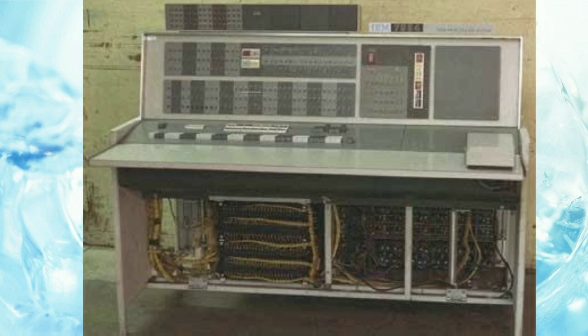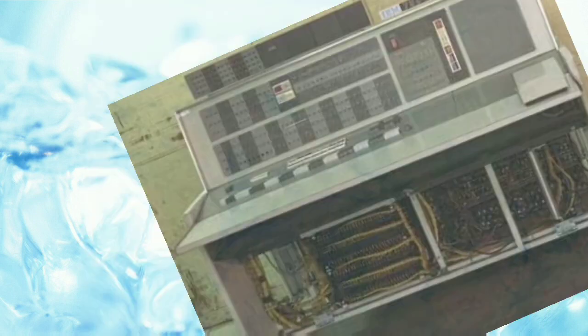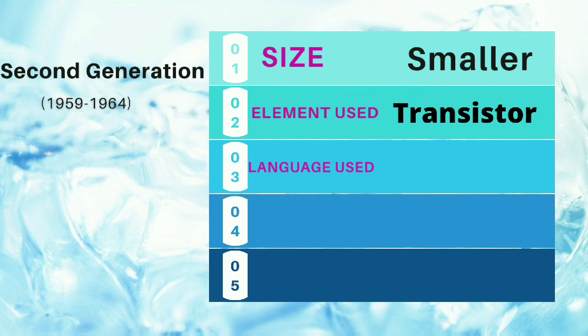Now, have you made guesses about what element was used in the second generation? Just as first generation used vacuum tubes, what was used in second generation computers? The second generation computers used transistors. The transistors were smaller in size compared to the vacuum tubes, which is why second generation computers were smaller in comparison to the first generation computers.